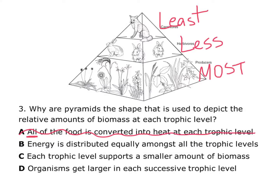Answer B says energy is distributed equally amongst all the trophic levels — that's just not true, and it doesn't even answer the question. Answer C says each trophic level supports a smaller amount of biomass, and that's exactly what's going on: most, then less, then least. Answer D says organisms get larger in each successive trophic level — they're trying to trick you, because individual organisms do often get larger, but the population as a whole has less biomass. That's an important distinction, and C is the right answer.